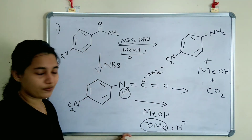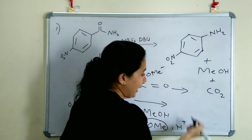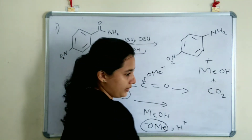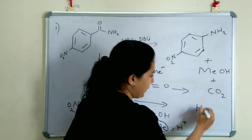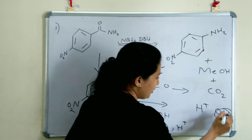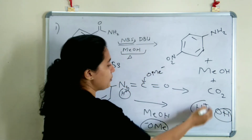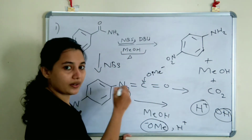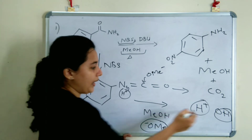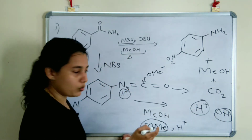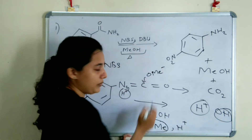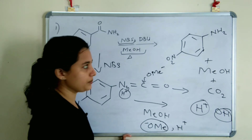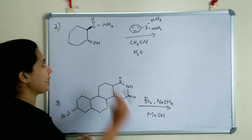NH2 is formed because the carbamic acid intermediate (NH-C(=O)-OMe) undergoes hydrolysis — H2O is added (H⁺ and OH⁻). H⁺ is added to NH giving NH2, and OH⁻ displaces OMe, giving MeOH and CO2.